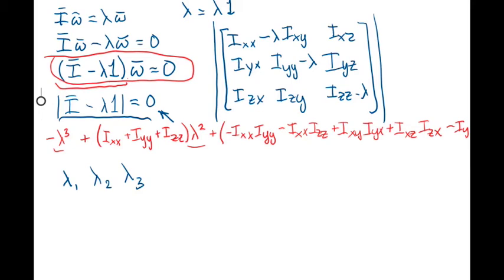These new eigenvectors are our new principal axes, or the unit vectors in the direction of the principal axes. Let's call the new angular velocity omega prime. Remembering that I times the original omega equals lambda times the new omega, where omega prime is defined in terms of the new principal axes, we have that I prime, I defined in terms of the new principal axes, is just the diagonal matrix of the three eigenvalues.